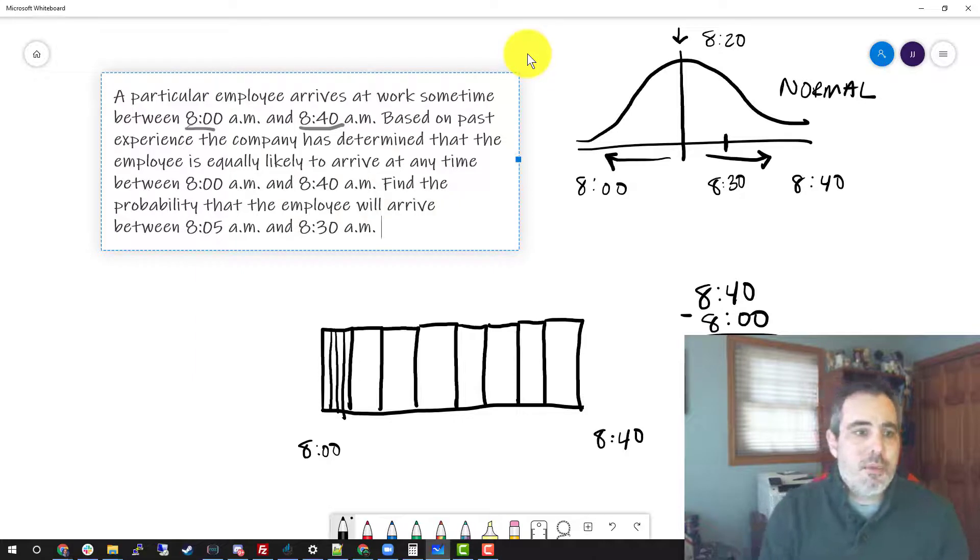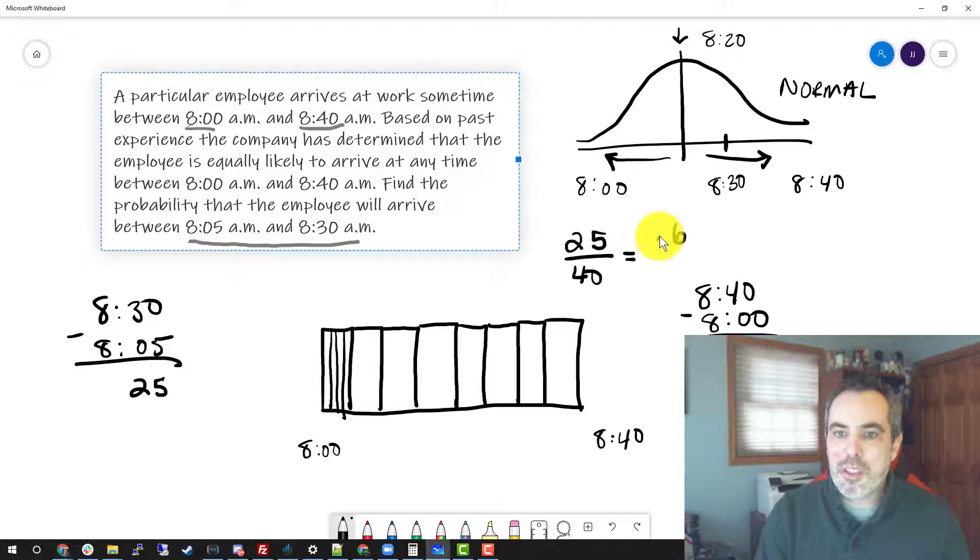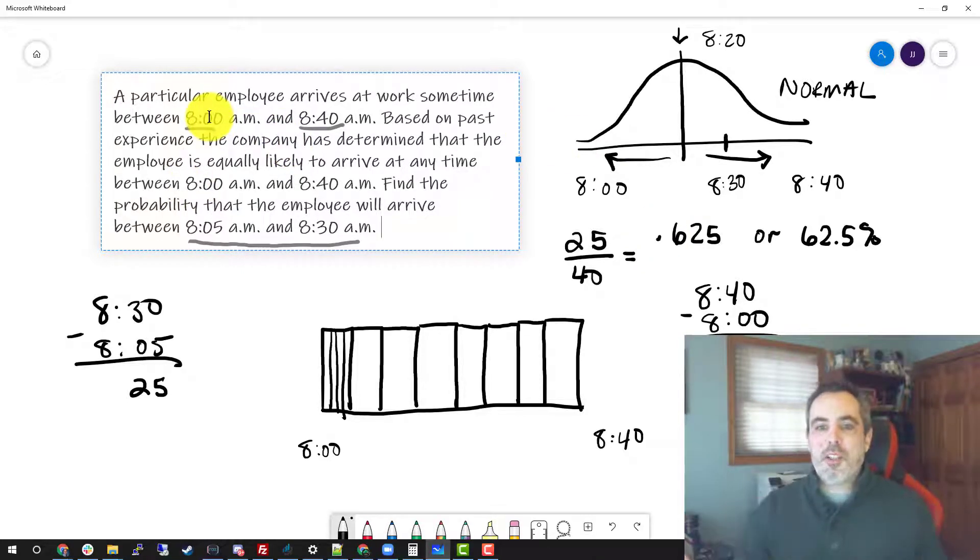In this case, they want to know what's the probability that he arrives between 8:05 and 8:30? Well, 8:30 minus 8:05 gives me 25 minutes out of 40 total. So this ends up being 25 out of 40, and we could turn that into a decimal 0.625 or 62.5%. So that is the type of question that we're looking at in a uniform distribution.